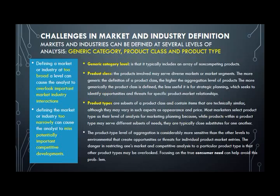Challenges in market and industry definition: markets and industries can be defined at several levels of analysis - a generic category, a product class, and a product type. A generic category level typically includes an array of non-competing products. The book spoke about breakfast foods - you can eat muesli and yogurt, porridge, cereal, cornflakes, bread with beans and eggs, pancakes, waffles. It's really generic.